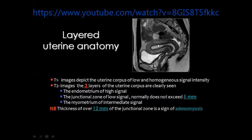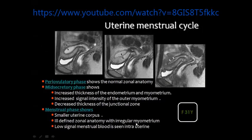The junctional zone is dark and the endometrium is bright. The normal thickness of the junctional zone should not exceed 5 mm. This is very helpful in the assessment of uterine adenomyosis, where you see significant increase in the thickness of the junctional zone. It is stated that a junctional zone thickness over 12 mm is diagnostic of adenomyosis.